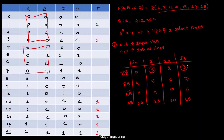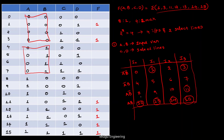So looking at the active minterms 1, 3, 11, 12, 13, 14, 15, and considering which A and B combination they fall under, now let's formulate the inputs.